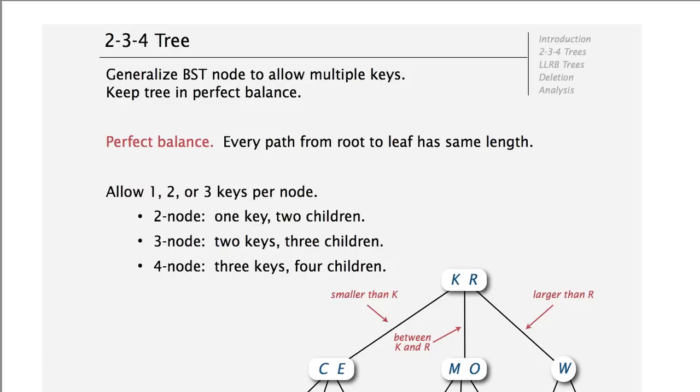So 2-3-4 trees, they are just like binary search trees, but instead of just one key per node, we have multiple keys. And the main thing is that we keep the tree in perfect balance. So all paths from the root to the leaf will always have exactly the same length.